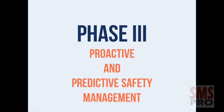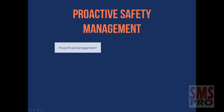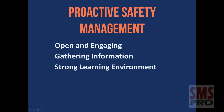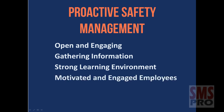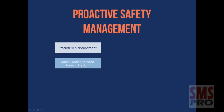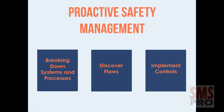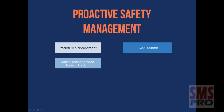Proactive safety management remains one of the tenets of Phase 3. Proactive managers focus on a more open and engaging management style, gathering information from all departments before making decisions. Proactive safety management creates a strong learning environment, focuses on breaking down systems and business processes to discover flaws and implement controls before events occur or latent conditions become aggravated. Goal setting and establishing concrete objectives is an important part of proactive safety management, providing strong focus for team members.